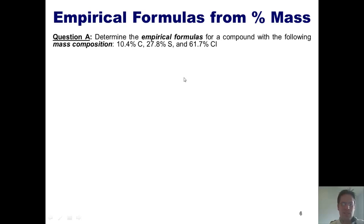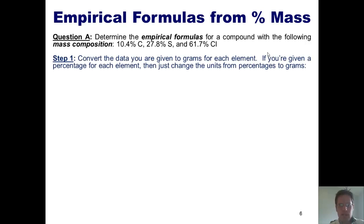First example says, we've got mass composition 10.4% carbon, 27.8% sulfur, and 61.7% chlorine. What's the empirical formula? We go through our steps. Step one, convert everything you're given into grams. If you're given percents, just change the percent sign into grams straight across. So we're going to assume that if we had a 100 gram sample, 10.4 grams would be carbon, 27.8 grams would be sulfur, and 61.7 grams would be chlorine.